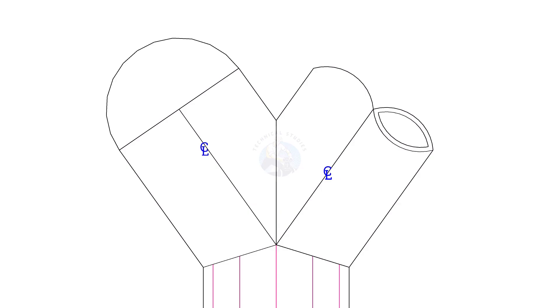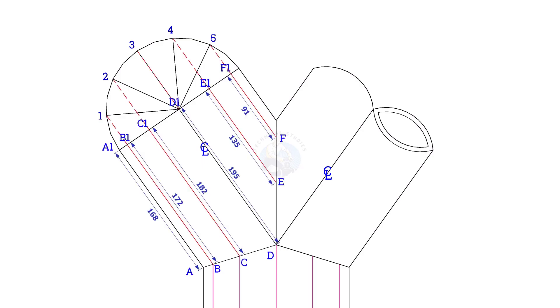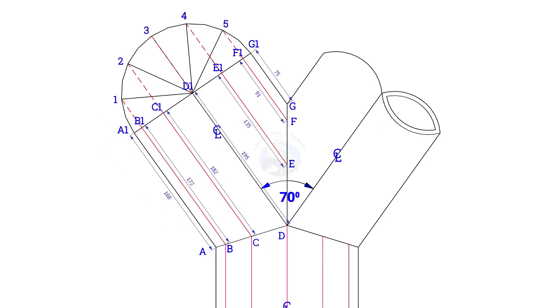To lay out the true length of the branches, the process is the same. Draw a half circle and divide it into six parts. Draw perpendicular lines as shown. Note down the length.